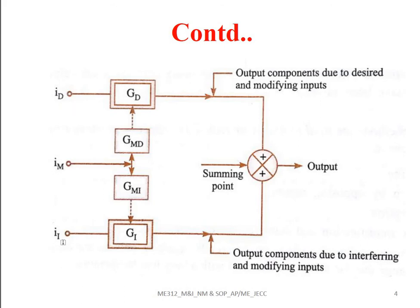Ia corresponds to the interfering inputs, which may change with respect to temperature or other factors. The changes in the desired and interfering inputs can be modified with the help of the modifying inputs Im. The modifying inputs are applied to both the desired quantities and the interfering inputs, represented by Gmd and Gmi corresponding to the desired and interfering inputs respectively.